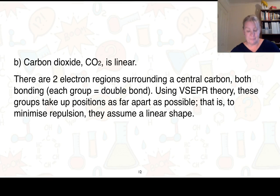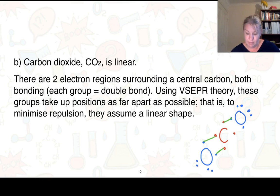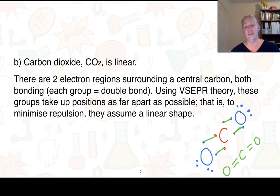Next is carbon dioxide. Carbon has four valence electrons and bonds to two oxygens. Each oxygen has six electrons around it. You can see there is one bond on each side connecting carbon to each oxygen. Even though I've drawn it on an angle, that arrangement gives us a linear shape — carbon dioxide. Using VSEPR theory, the groups take up positions as far apart as possible to minimize repulsion, giving us a linear shape.